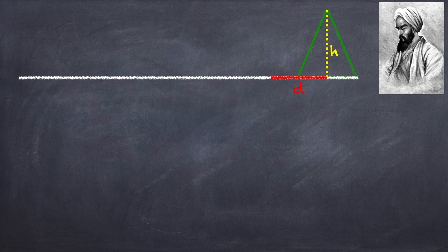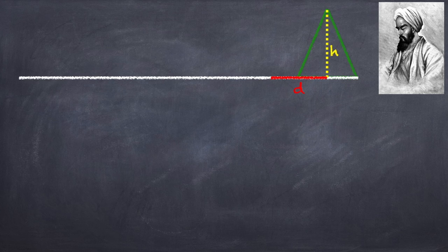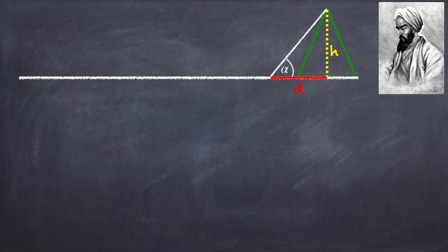So you just stand and look at the mountain. And then you measure the angle above the horizontal that your line of sight makes to the top of the mountain. We're going to call this angle alpha.